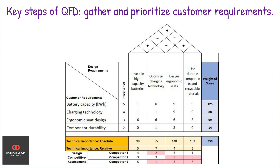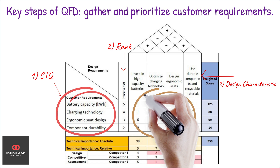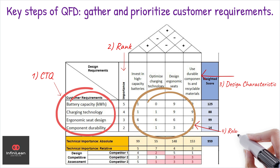Next, develop a ranking system to prioritize these needs based on essential factors and customer satisfaction. Following this, brainstorm design characteristics that can fulfill these needs. At the center of the house, establish relationships between what customers want and how your product characteristics meet their needs. Finally, a relationship between the different design characteristics will be established on the house's roof.